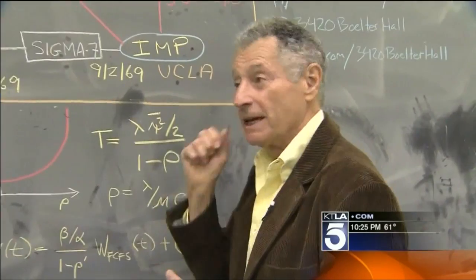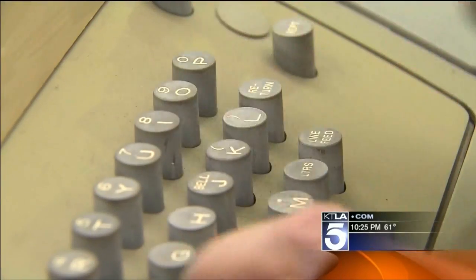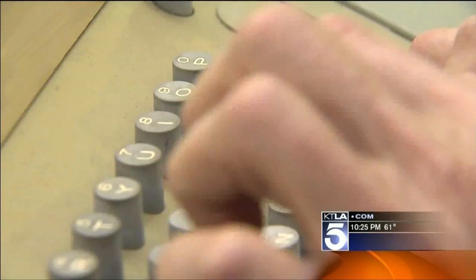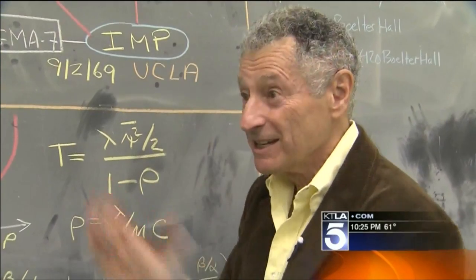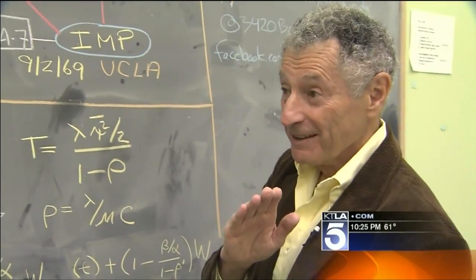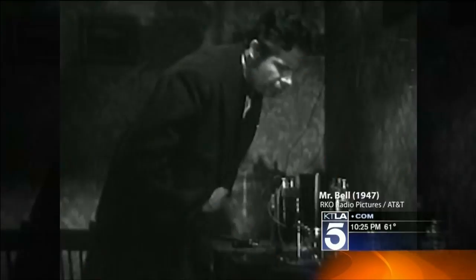We typed in the L. He said, you get the L? Yep, got the L. Typed the O — you get the O? Got the O. Typed the G — you get the G? Crash. That would make the first message ever sent over the internet: L-O.